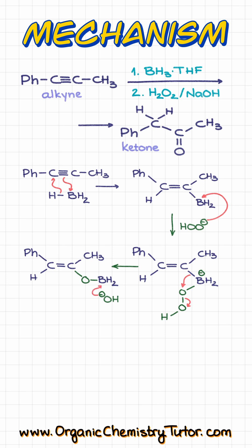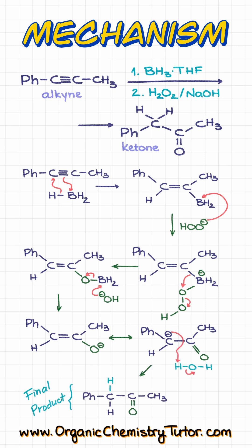Then boron is going to fall off, making the corresponding enolate, which is of course a resonance stabilized species, which will quickly grab the proton from water, giving us our final products.